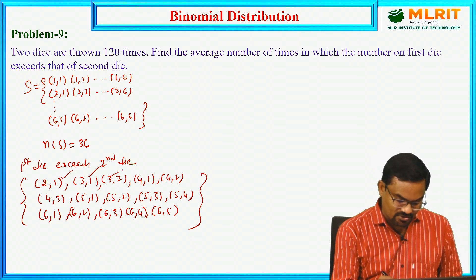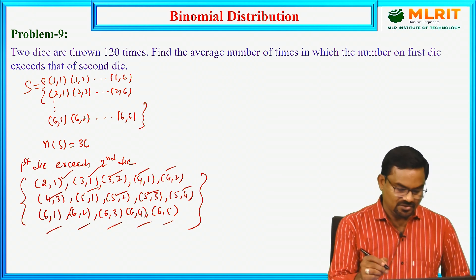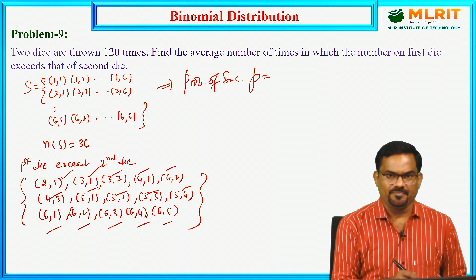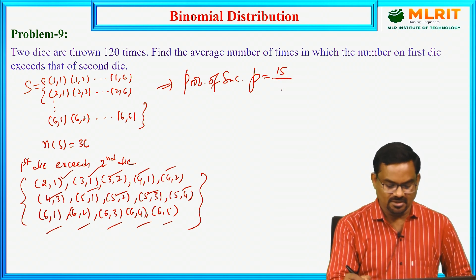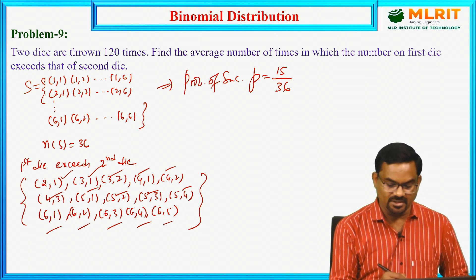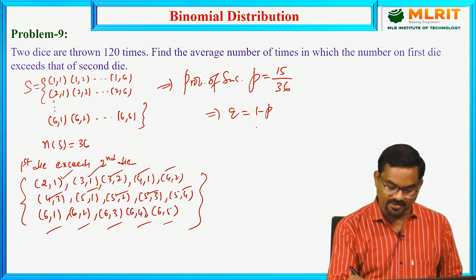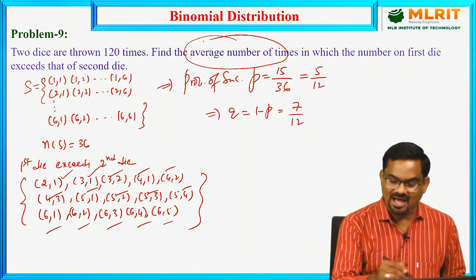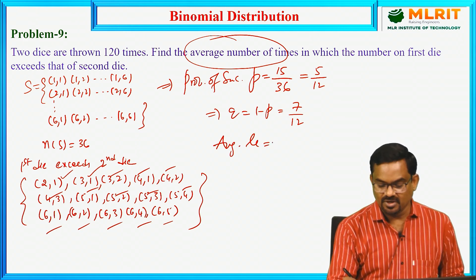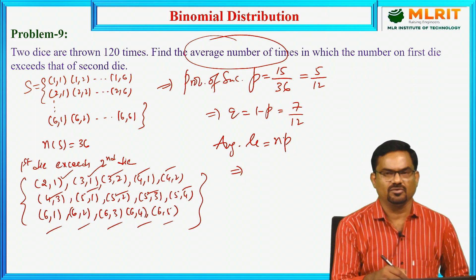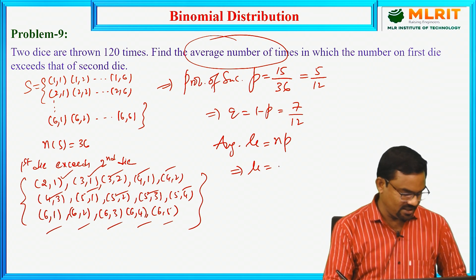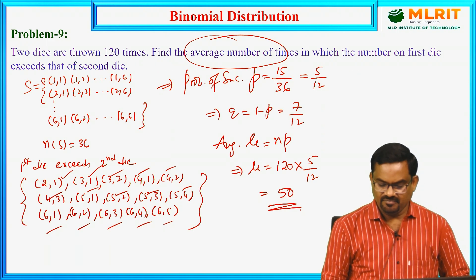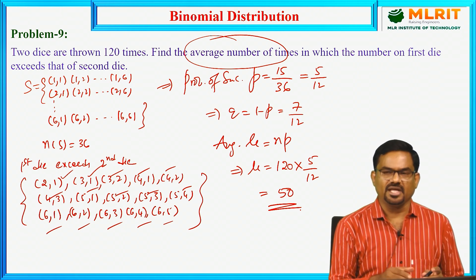Counting these favorable outcomes: there are 15 cases out of 36 where the first die exceeds the second. So the probability of success p equals 15/36, which simplifies to 5/12. Then q equals 1 minus 5/12, which is 7/12. The question asks for the average number of times, which means the mean mu. Since this follows binomial distribution, mu equals n into p — 120 multiplied by 5/12 — giving 50. On average, 50 times the first die exceeds the second.